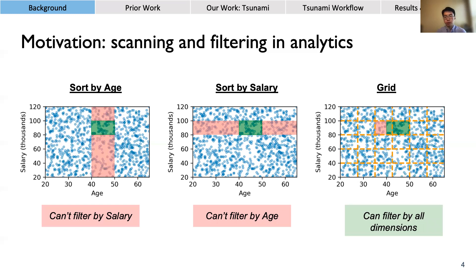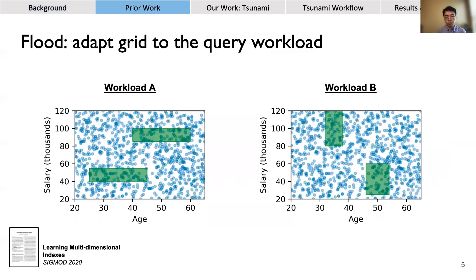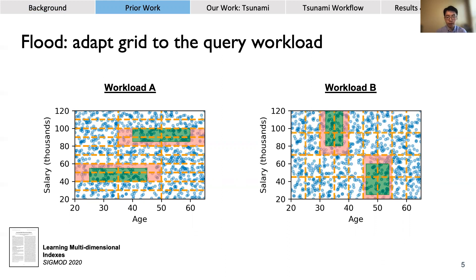One major challenge with grid layouts is how to configure them — which dimensions to include and how many partitions to create in each dimension. In our prior work published at last year's SIGMOD, we introduced a learned multi-dimensional index called Flood that automatically adapts the grid layout for a particular query workload. For workload A, where queries are more selective over salary than age, Flood automatically creates a grid with many more partitions over salary. For workload B, Flood creates an entirely different grid specialized for those queries. This learned quality allows Flood to outperform many traditional indexes and data layouts.